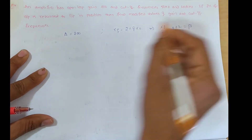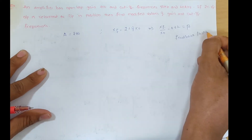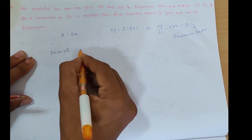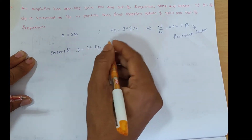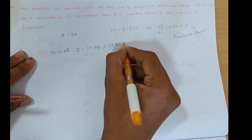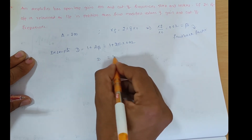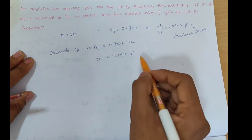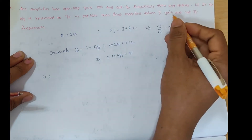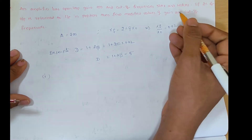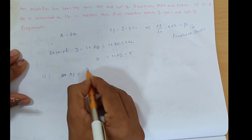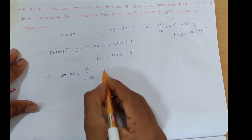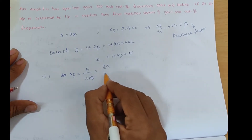XF/X0 is the feedback factor beta. So beta = 0.02. Now we calculate desensitivity D = 1 + Aβ. With A = 200 and β = 0.02: D = 1 + 200 × 0.02 = 5. The feedback gain AF = A ÷ (1 + Aβ) because in negative feedback amplifiers, gain always decreases. So AF = 200 ÷ 5 = 40.